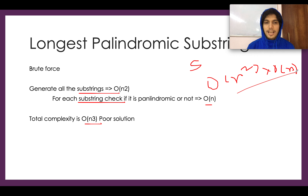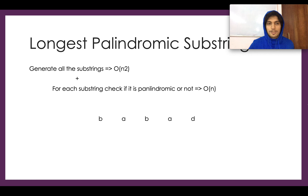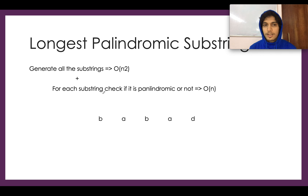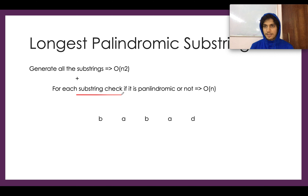Now the interviewer will ask: can you improvise on this solution? The answer is yes. The answer lies within the question itself. In the previous case we multiplied the generation of all substrings with checking whether it is palindromic, and that resulted in O(n³). Can we think smarter — do something while we are generating substrings so that the checking part can be done within the same step?